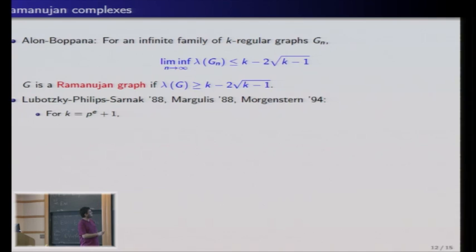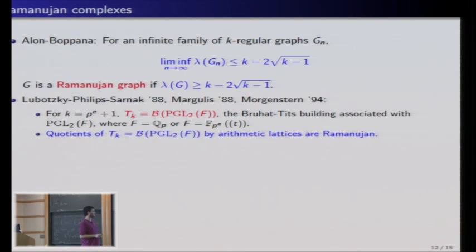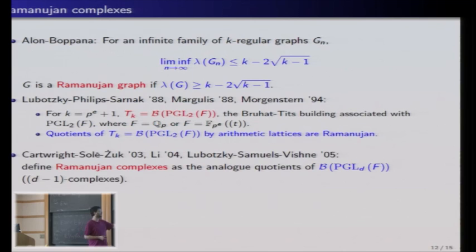And the famous construction of Lubotzky, Phillips, and Sarnak, and Margulis, and then Morgenstern construct these graphs using the Ramanujan conjecture, hence the name, for k which are prime powers plus 1, as quotient of the Bruhat-Tits building, Bruhat-Tits tree, associated with PGL2 over a non-Archimedean local field. So I won't go into the details, but basically the quotient by arithmetic lattices are Ramanujan. This is the main theorem here, and it relies on very deep and prestigious work in representation theory, number theory.